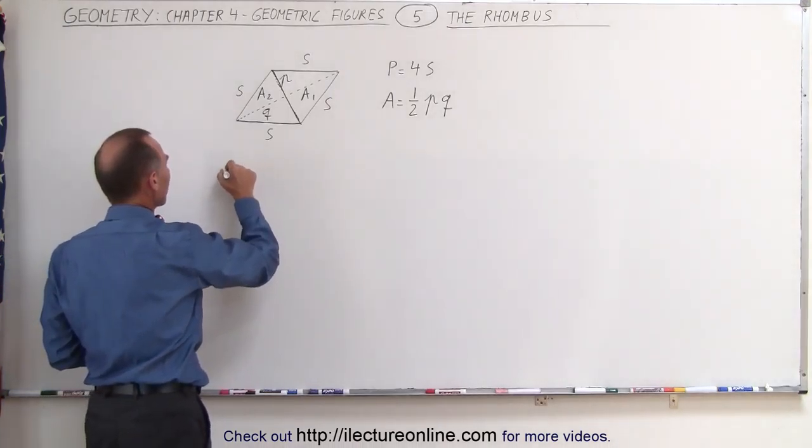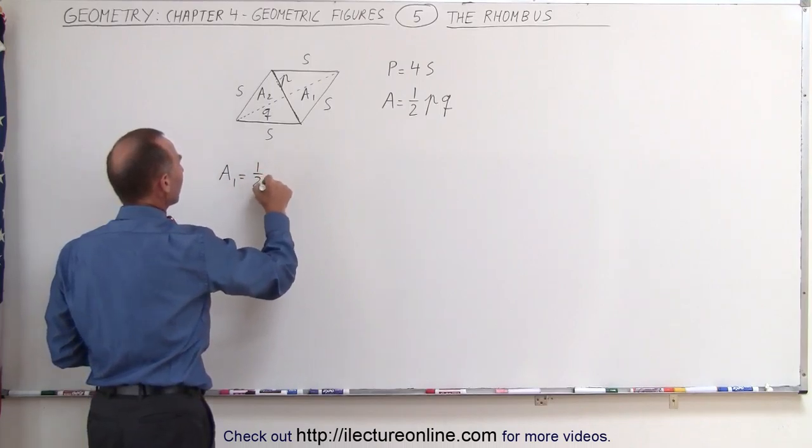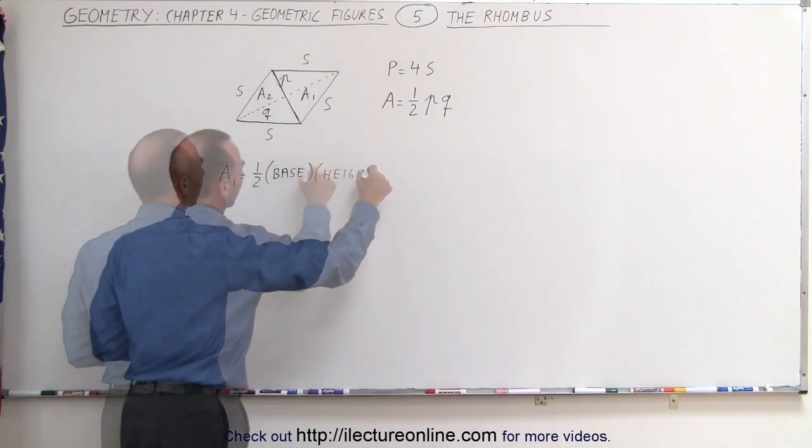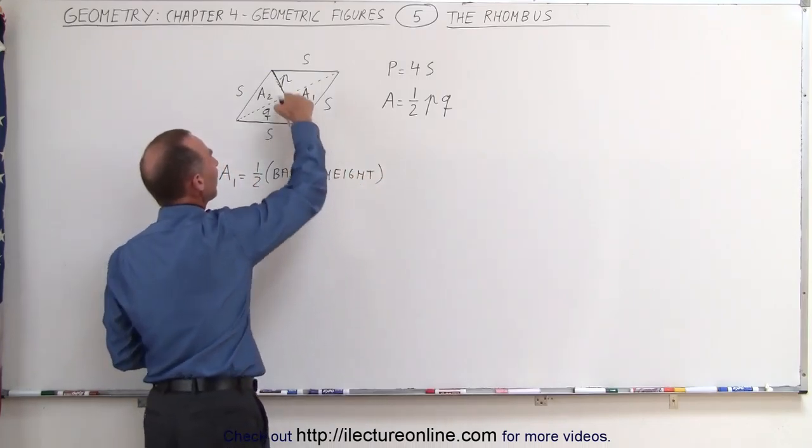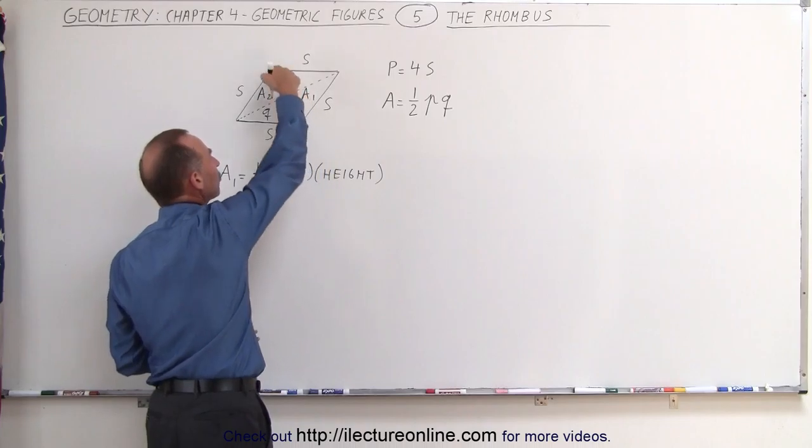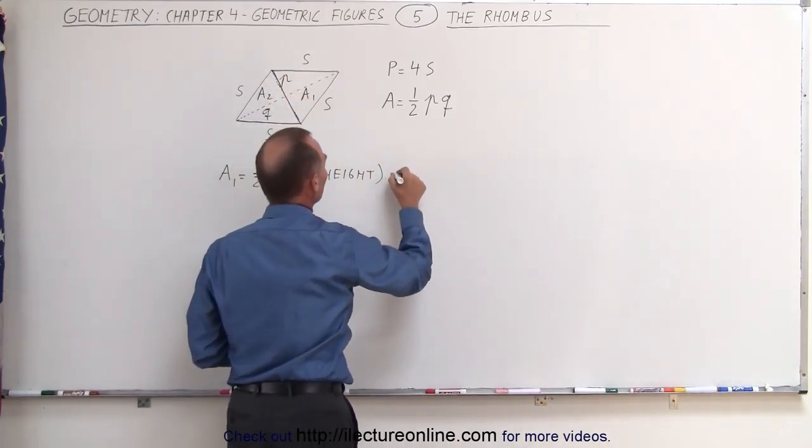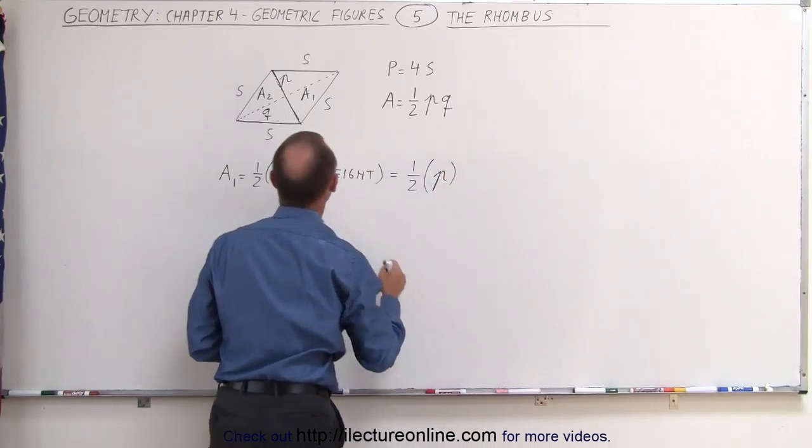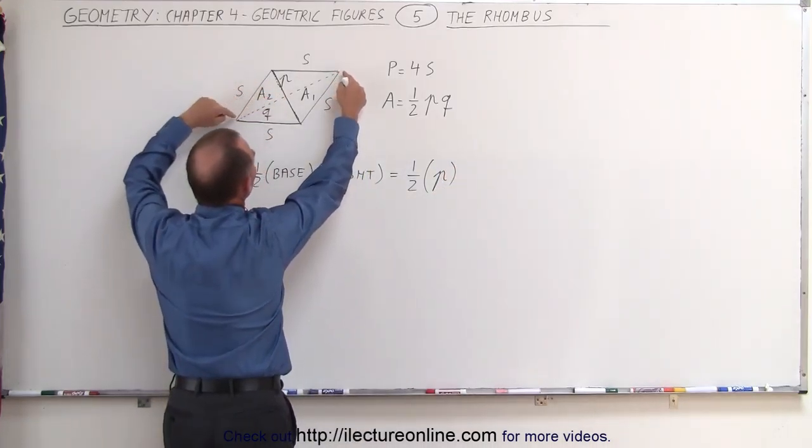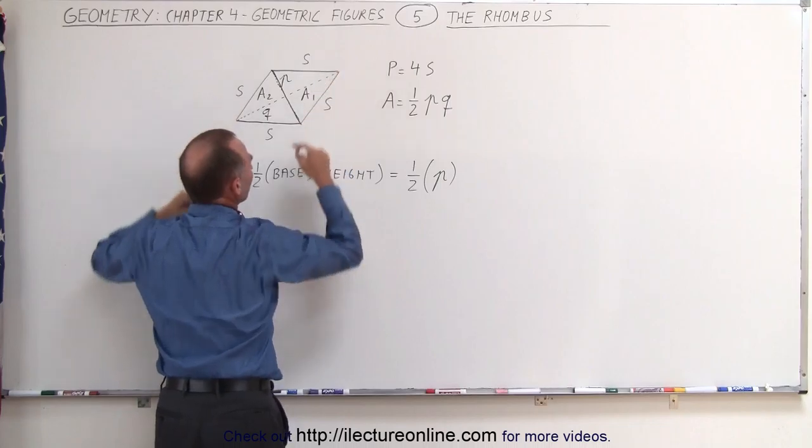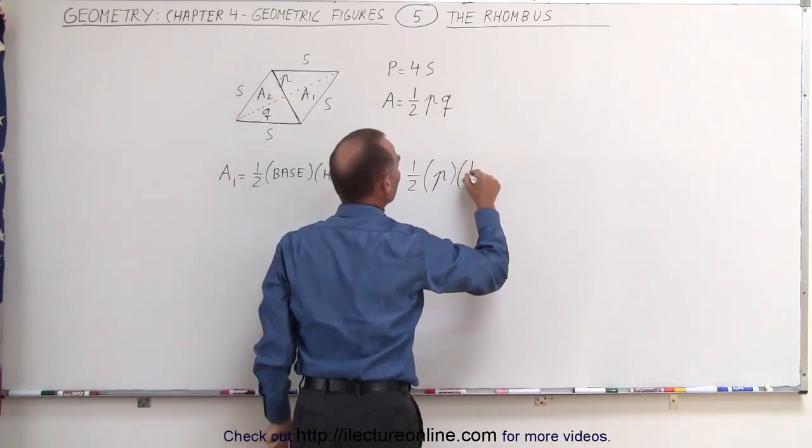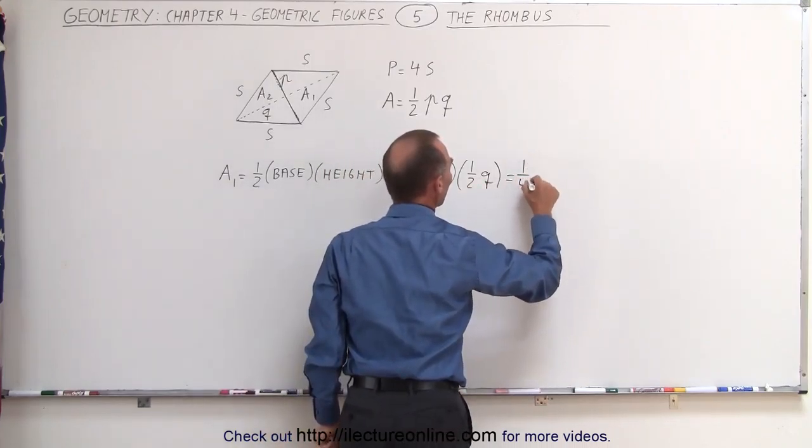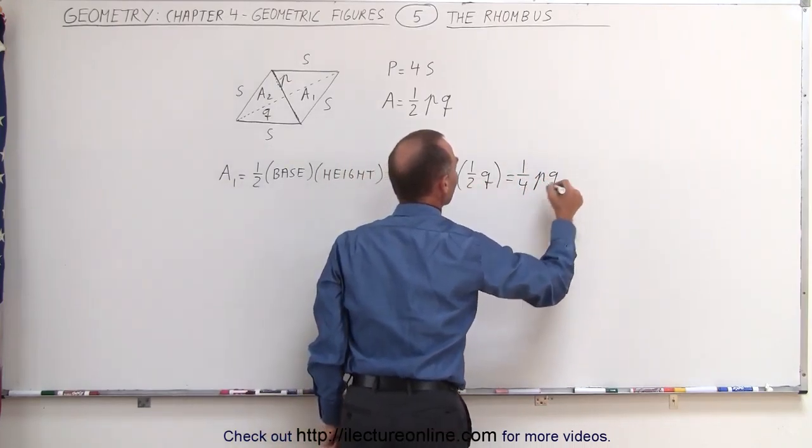Now the area of the first triangle A1 is equal to half the base times the height. In this case the base of the triangle here will be equal to the length of the shorter diagonal P. So this would be one half times P times the height, and in this case the height will be half the length of the diagonal Q, so it would be times half Q, which means when we multiply this together we get one quarter P times Q.